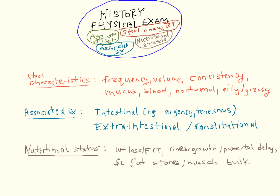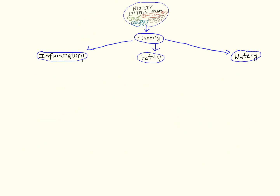Based on the clinical presentation, patients can be classified as having either inflammatory, fatty, or watery subtypes. While there is some overlap in the clinical features and etiologies, this organization is still most useful, especially when the diagnosis is unclear, because it can help narrow your differential and rationalize further investigations, most of which can be performed without the need for consultation.